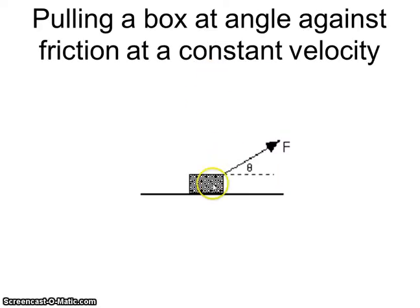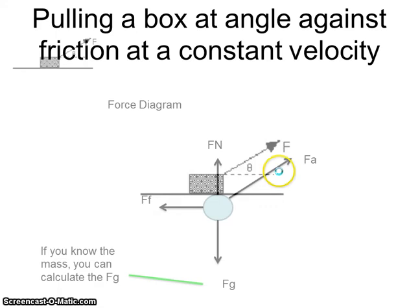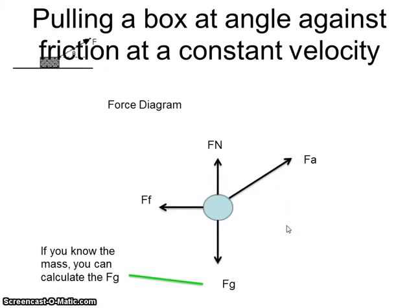What about if we pull a box at an angle? Now the key is constant velocity. Constant velocity says balanced forces. So that means my up forces cancel my down forces. My left forces cancel my right forces. Balanced forces. So first start off and draw the force diagram. So you've got force of gravity going down. You've got the frictional force going against the direction of the motion, parallel to the surface. You've got the normal force, and you've got the applied force.